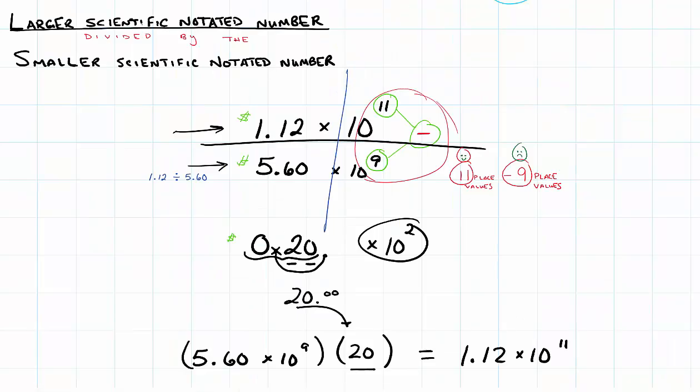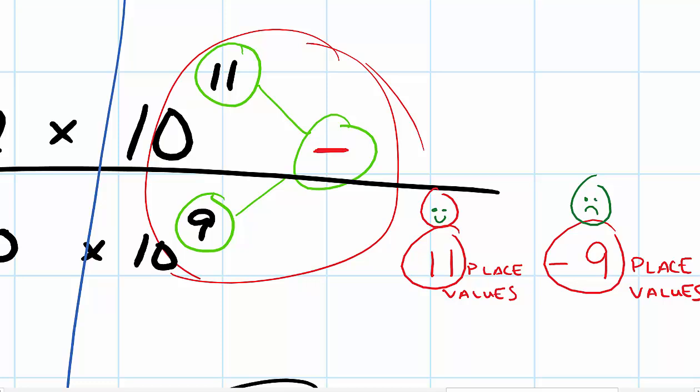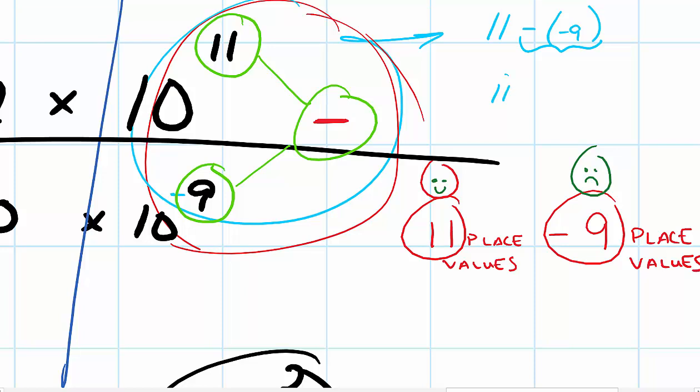All right, be sure to remember your integer rules when you subtract exponents. Because if for some reason you end up with one of these numbers and it's a negative, let's say that the 9 was negative, you're now taking 11 and subtracting negative 9, which really means two negatives. What do you actually have? You actually have a positive there if that was the case. So you've got to watch out for your integer rules. 11 and 9 give you a total of 20 place values in that case. So watch out for those and make sure you know your integer rules before you really try to divide scientific notated numbers.